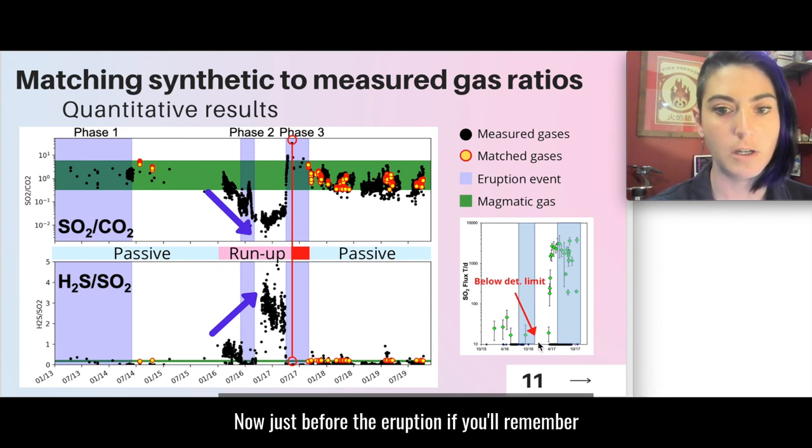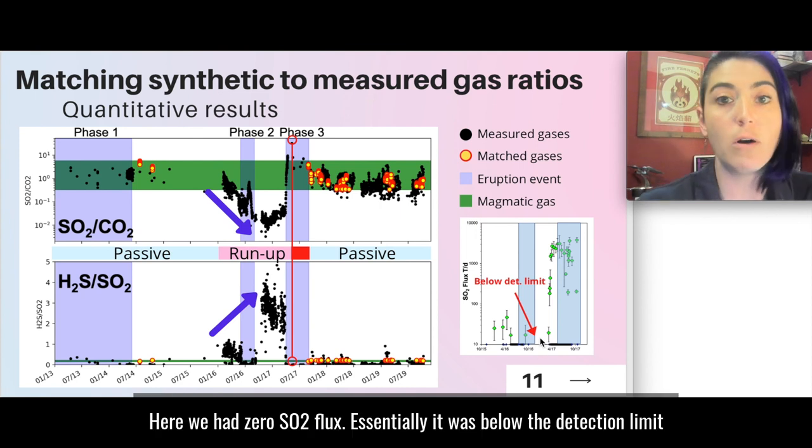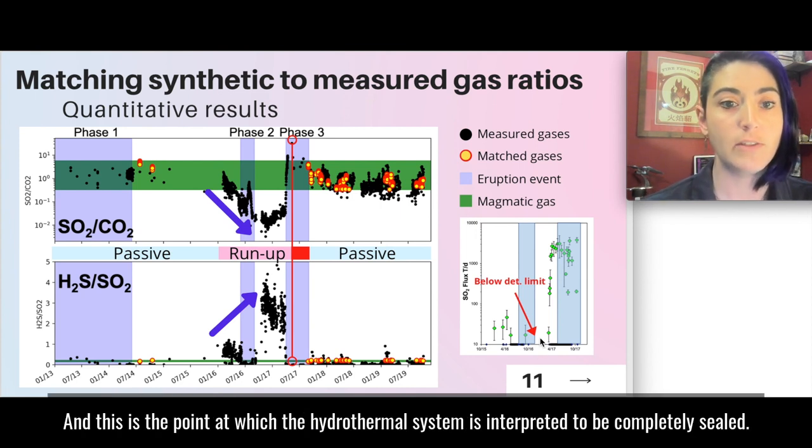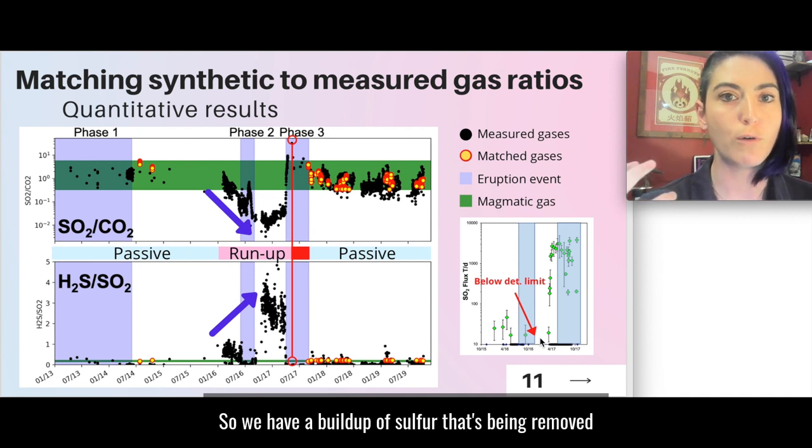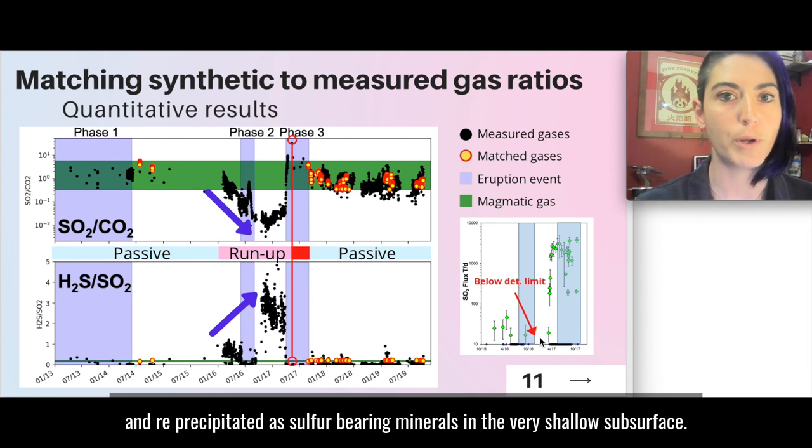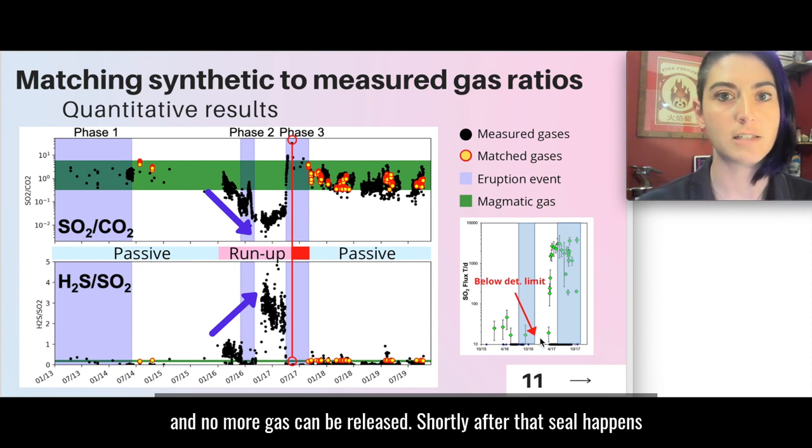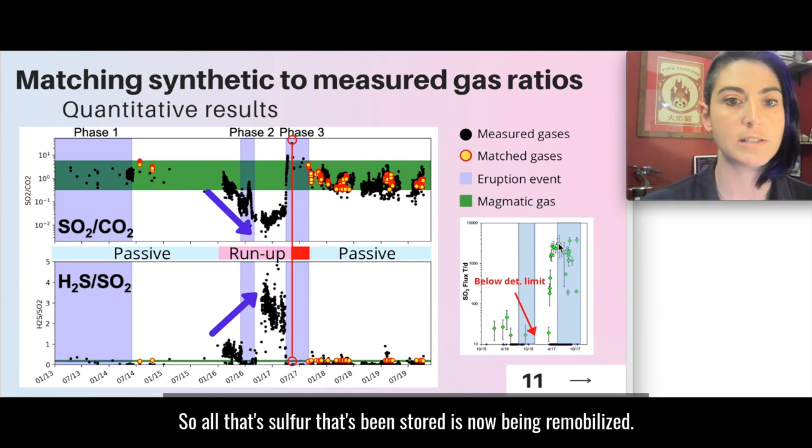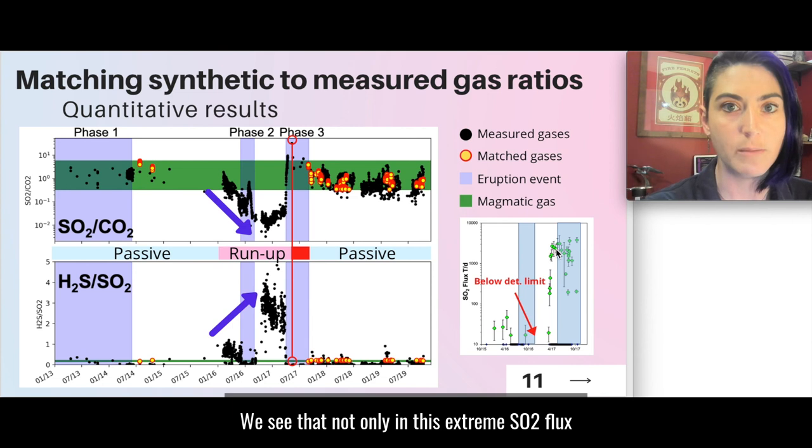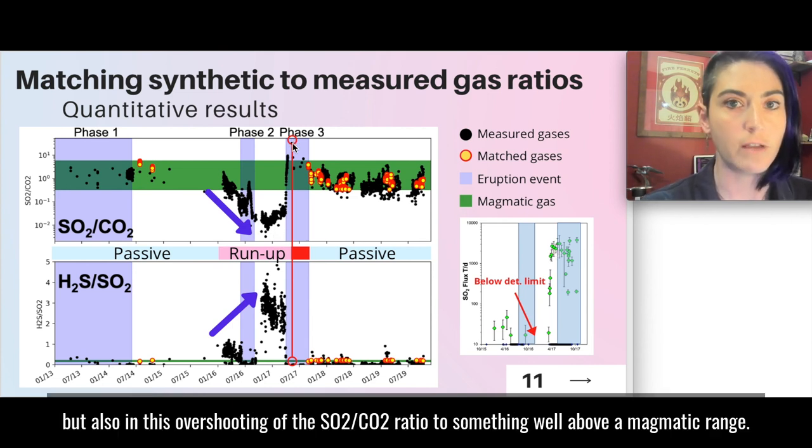Now just before the eruption, if you'll remember, here we had zero SO2 flux, essentially. It was below the detection limit. And this is the point at which the hydrothermal system is interpreted to be completely sealed. So no gas at all is able to escape at this point. So we have a buildup of sulfur that's being removed and re-precipitated as sulfur-bearing minerals in the very shallow subsurface more and more until that actually completely seals up and no more gas can be released. Shortly after that seal happens, we see this catastrophic release of sulfur-rich gas. So all that sulfur that's been stored is now being re-mobilized. And we see that not only in this extreme SO2 flux, but also in this overshooting of the SO2/CO2 ratio to something well above a magmatic range.